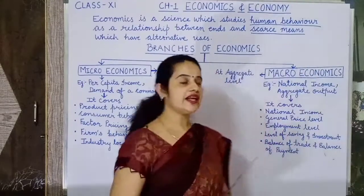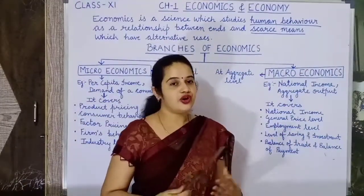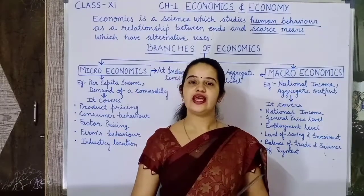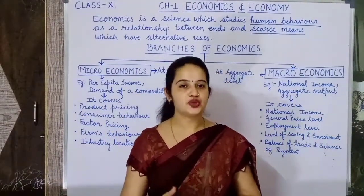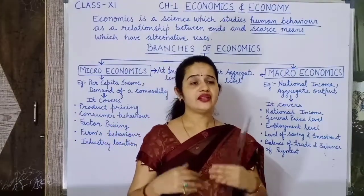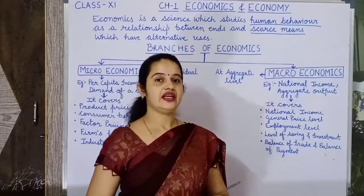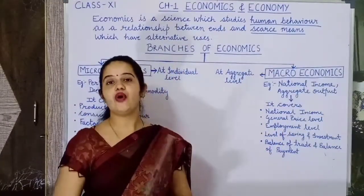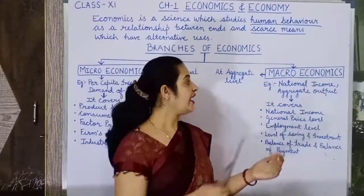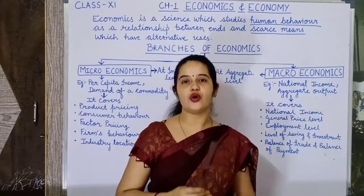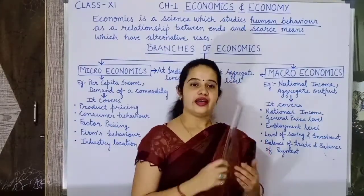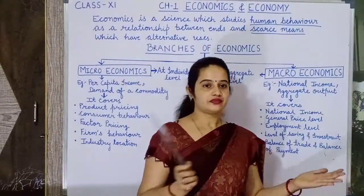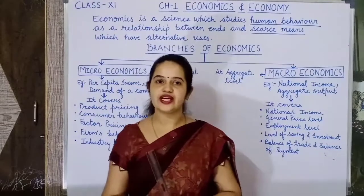Macroeconomics is that branch of economics which deals with the economy as a whole instead of individual aspects. Here we study economic variables at the aggregate level such as national income and aggregate output. National income means income of a country as a whole, and aggregate output means total output of an economy. So here we study variables at a larger unit: total consumption, total investment, total saving.